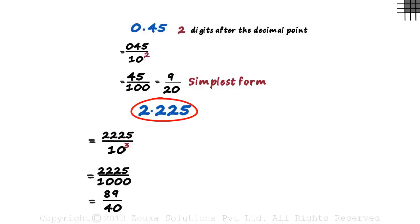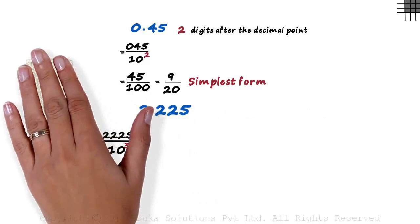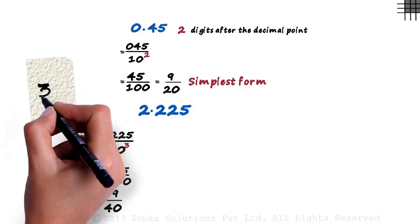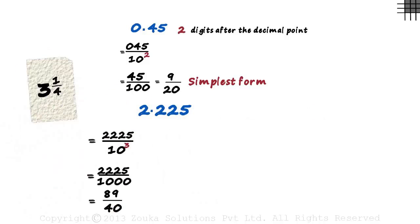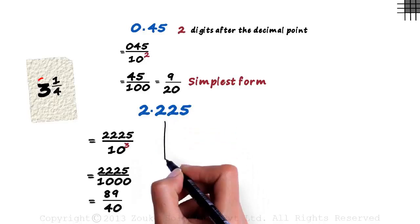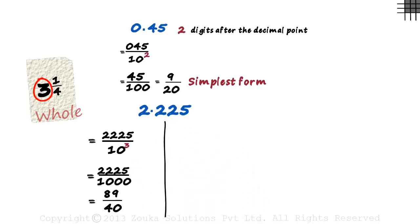But what if you are asked to write 2.225 as a mixed fraction? A mixed fraction is something like 3 1 by 4. It means 3 and a quarter. 3 is called the whole part and 1 by 4 is called the fractional part. So how do we get this decimal form in this mixed fraction form?